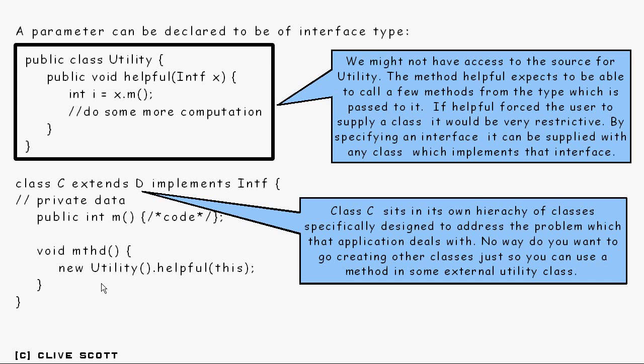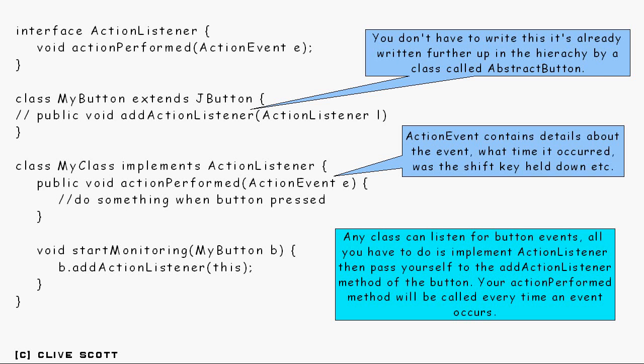Now let's take a look at a different way that they can arise. Here's an example of how interfaces can arise in practice, and this sort of thing goes on in Swing, where Swing is Sun's GUI, basically, for Java.